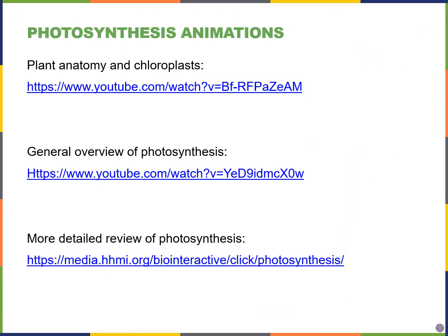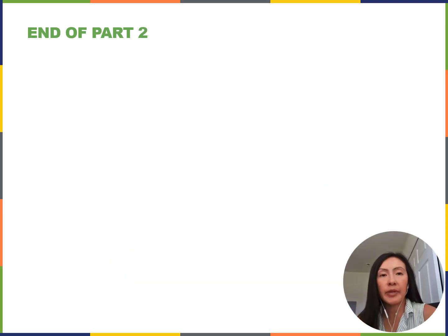Chapter 8 has a few nice links to animations and videos. The first is from the California Academy of Sciences, a great way to visualize where photosynthesis happens. The second is an overview of photosynthesis including light reactions and the Calvin cycle — general but good for summarizing your learning. The last is from HHMI, Howard Hughes Medical Institute, a detailed review of the light reactions and Calvin cycle. That takes us to the end of chapter 8 on photosynthesis. In the next chapter, chapter 9, we'll be talking about cell communication.